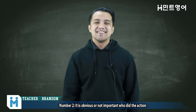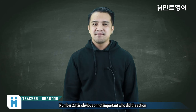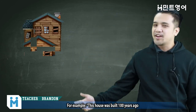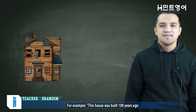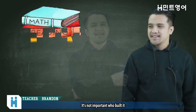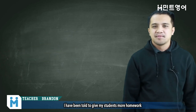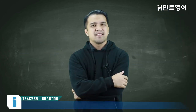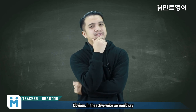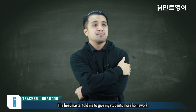Number 2: use the passive voice when it is obvious or not important who did the action. For example, 'This house was built 100 years ago' — it is not important who built it. Or, 'I have been told to give my students more homework.' In the active voice, we would say, 'The headmaster told me to give my students more homework.'